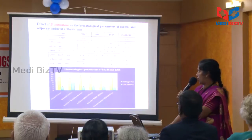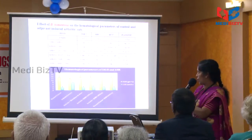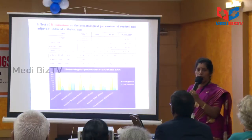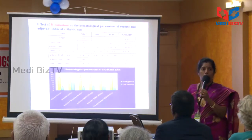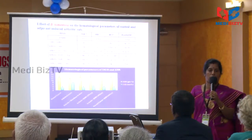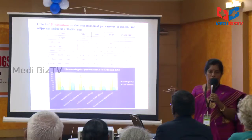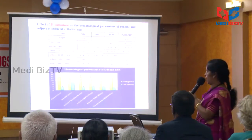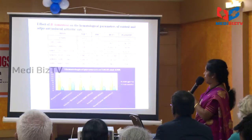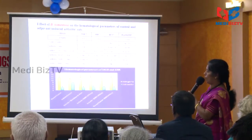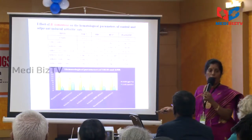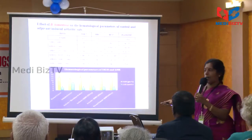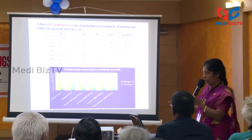This is about the hematological parameters — what changes come with RBC, WBC, and platelet counts. There is quite good variation from the control to the inflammatory-induced and the treatment system. There is a decrease, and later they go for restoration to normal. This gives a positive indication that the plant contains anti-inflammatory potential.